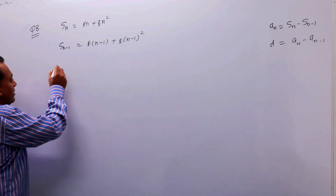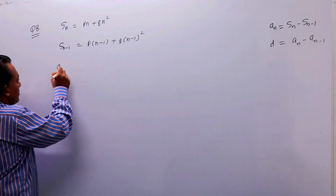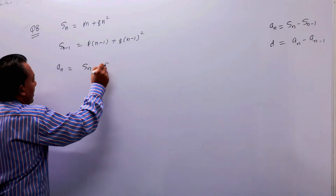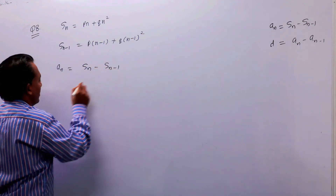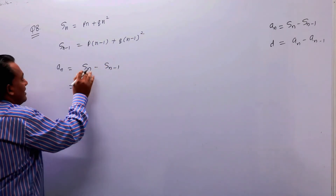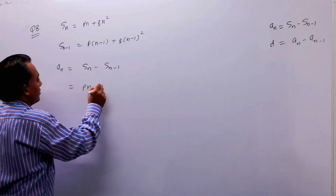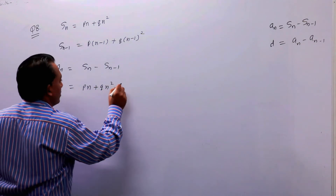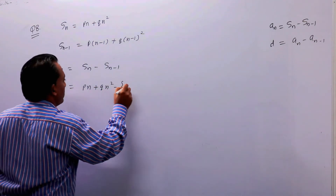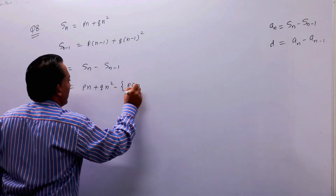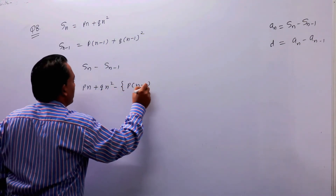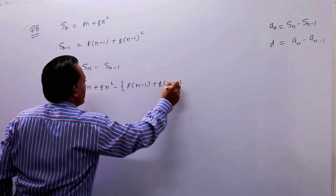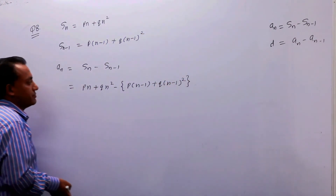अब आपको an चाहिए। वो होगा Sn minus S(n-1)। Sn की value है Pn + Qn², और S(n-1) की value है P(n-1) + Q(n-1)²।